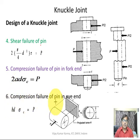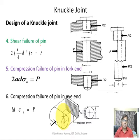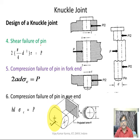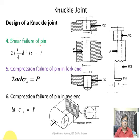The next failure mode is compression failure of the pin in the eye end. The pin is in contact with the eye portion, and there may be a compression failure between the pin and the eye. The area under compression is B × D, so B·D·σ_c equals the applied load P in the limiting case.